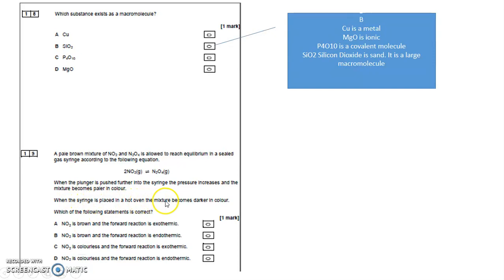When the syringe is placed in a hot oven, the mixture becomes darker in color. When I put it in a hot oven, I'm making more of this dark NO2 and less of the pale N2O4. The equilibrium is shifting to the left.